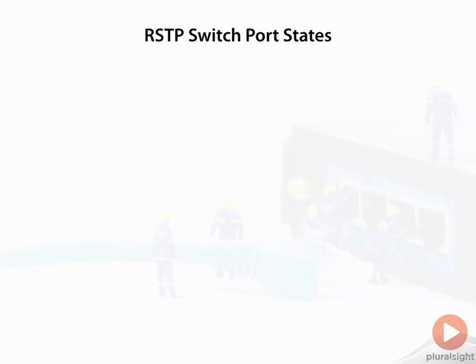In addition to port roles, Rapid Spanning Tree also has port states. A port state could be discarding, which means that I don't send any of my users' traffic over that port because it's not forwarding traffic.